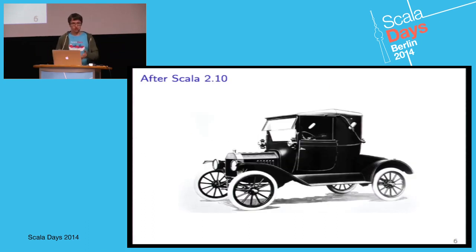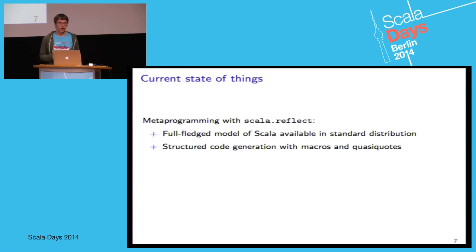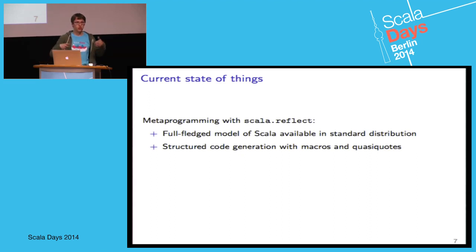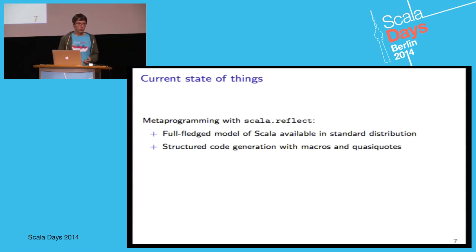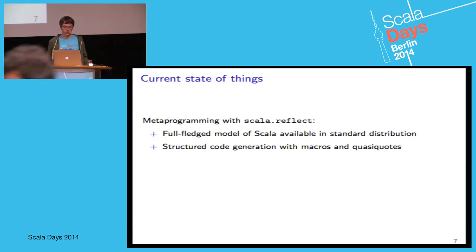What happened in Scala 2.10 is that we got this cool vehicle — some sort of a principled approach. With scala.reflect, which became part of Scala's standard distribution in 2.10, we got a full-fledged model of Scala which included all native constructs — not just Java, which Scala compiles down to — but all intricacies like by-name parameters, higher-kinded types, and so on. Everything is available in a neatly packaged, comprehensive, full-fledged model. The second part is that this model enabled a structured approach to code generation — thanks to macros and quasi-quotes, it's possible to do more than just throwing together strings, and it actually saves time when you need to do metaprogramming.